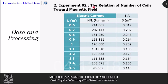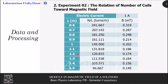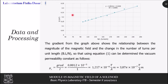For experiment 2, we determine the relation of number of coils towards the magnetic field. In this experiment, we fix the electric current to 1 ampere, meanwhile the length of the solenoid is variated from 0.6 meters to 1.5 meters, each with an interval of 0.1 meter for a total of 10 variations. We then calculate the number of turns per unit length of the solenoid using a solenoid with 145 turns, and measure the magnetic field at the center of the solenoid for each variation, giving the data in this table. The data is then regressed linearly with the y-axis as magnetic field and the x-axis as number of turns per unit length of solenoid, giving the following linear regression equation.